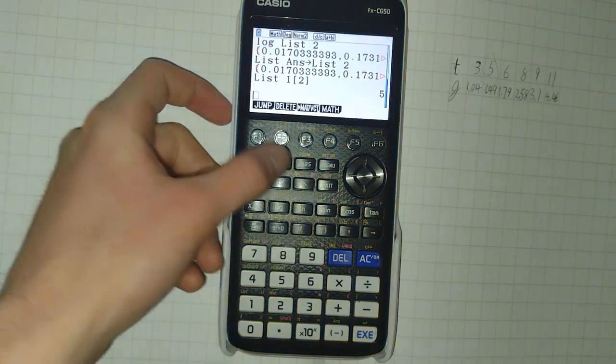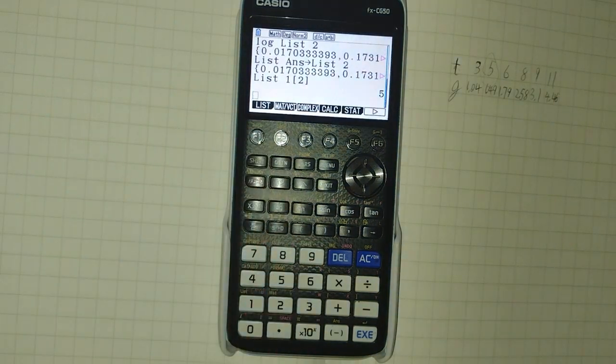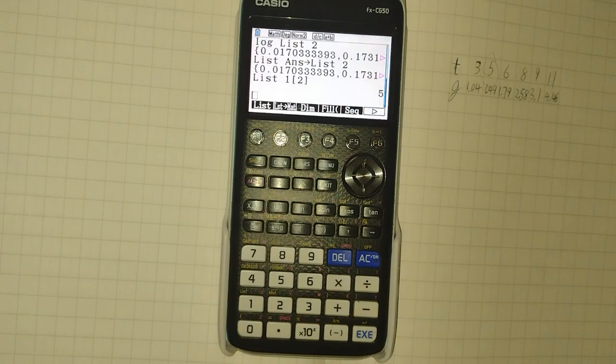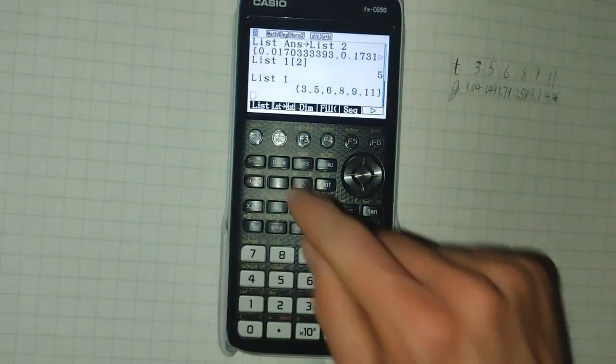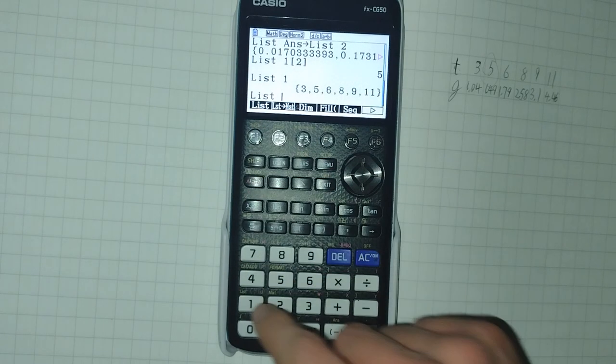But there's lots and lots more we can do with lists in run matrix. Clicking option, and then F1 brings us to the list menu. Here, clicking F1 will get us the list symbol character that we can also get from shift one.